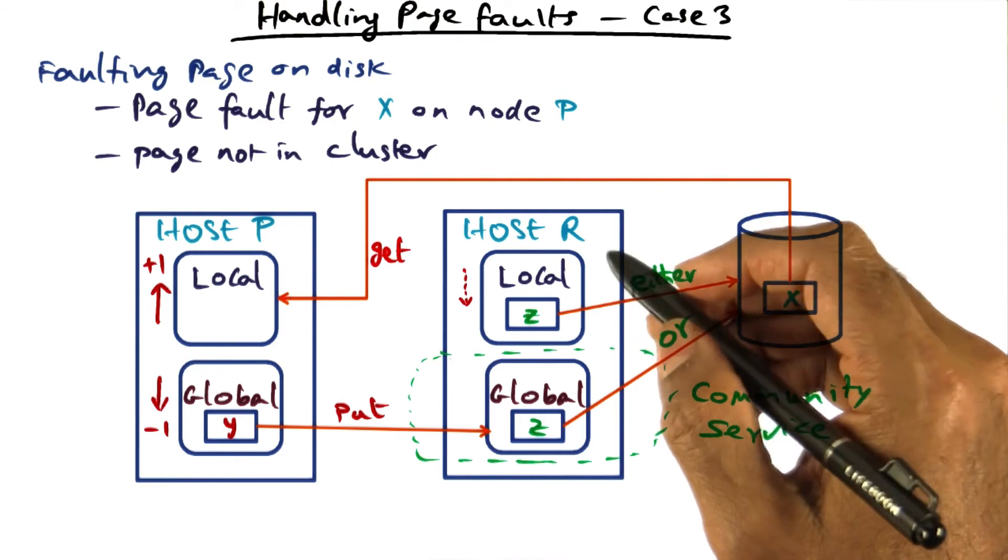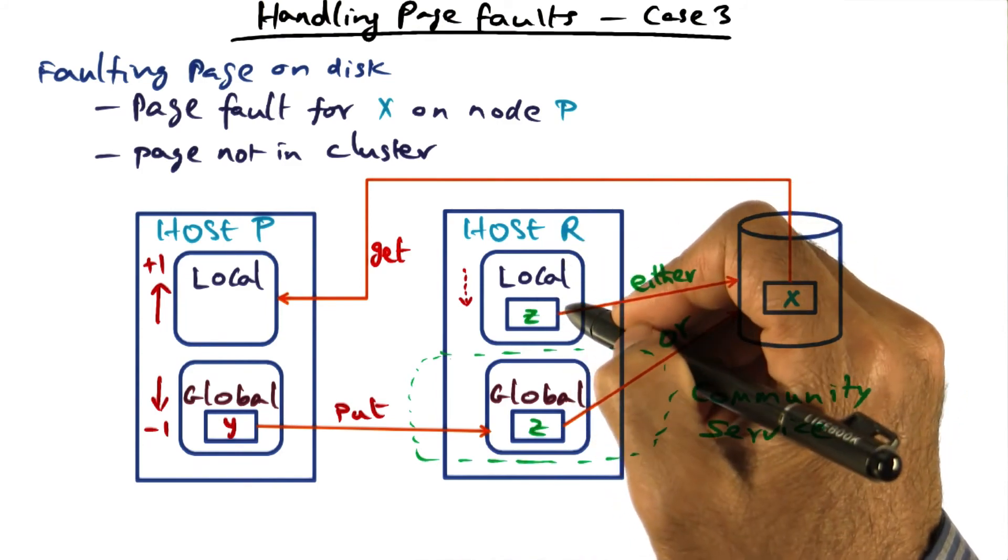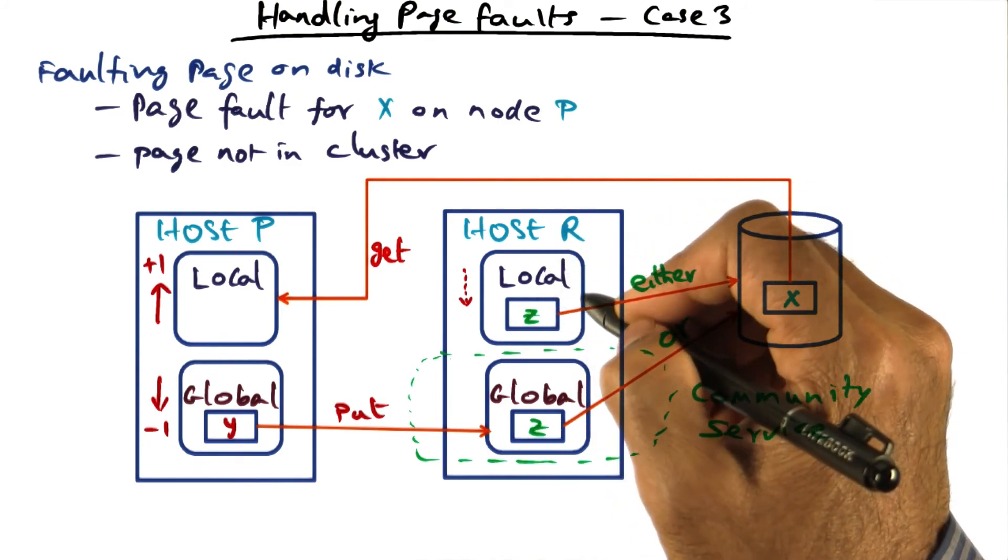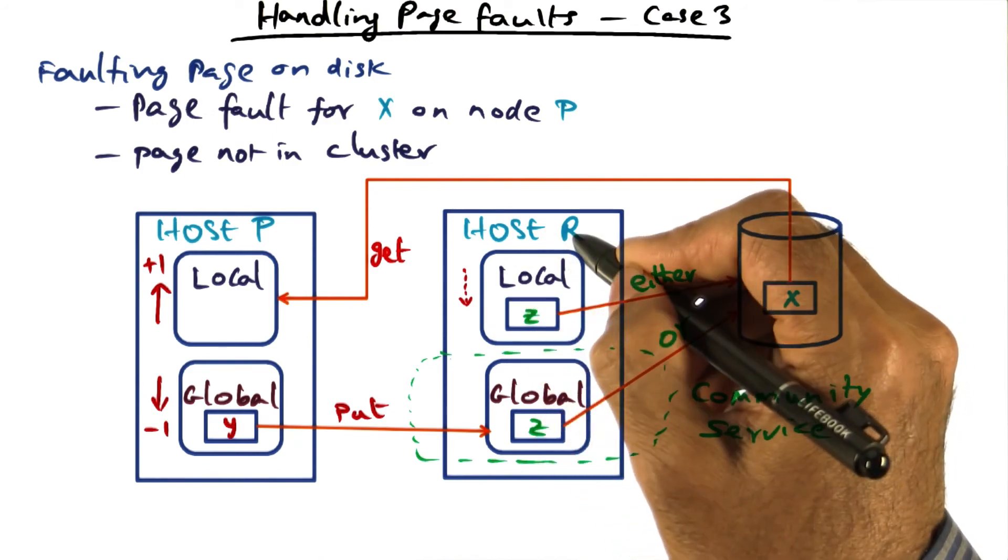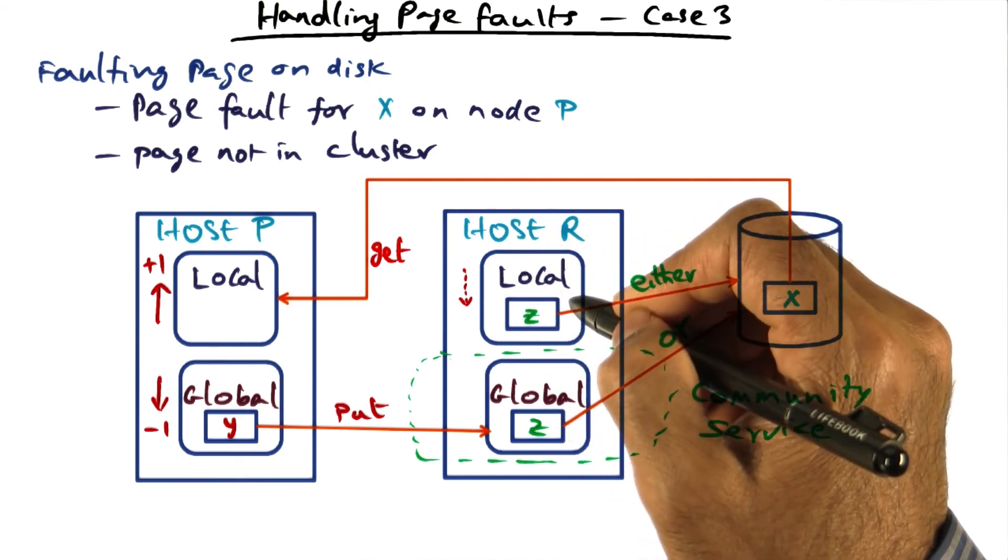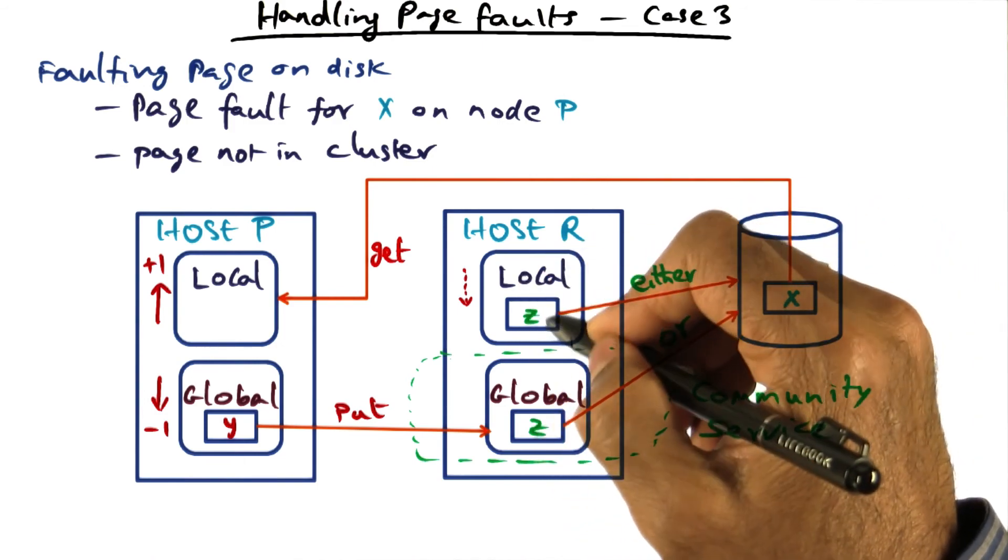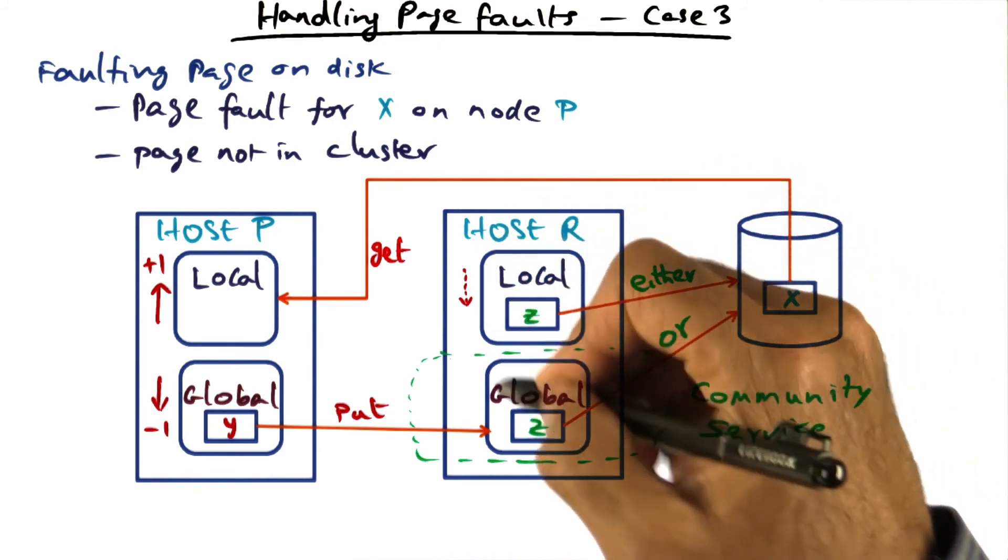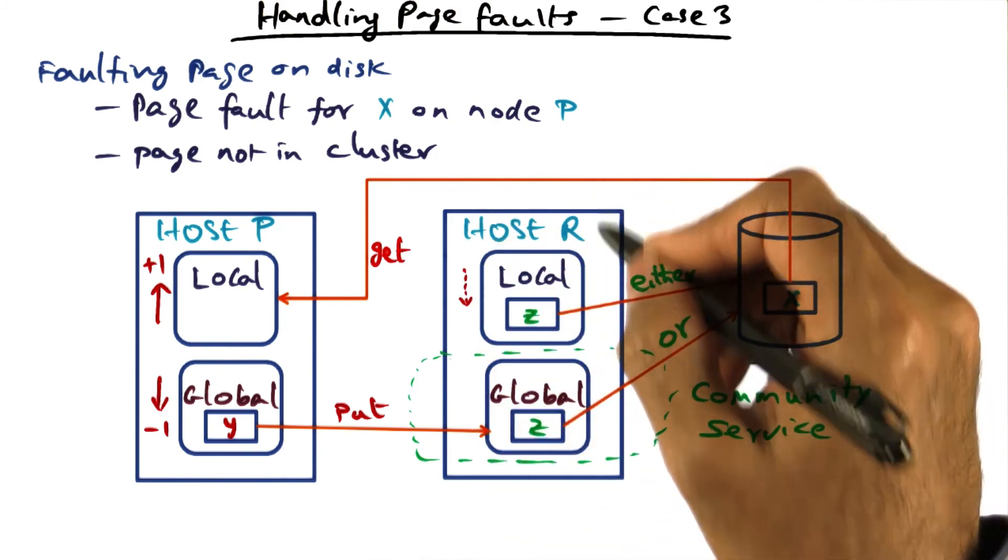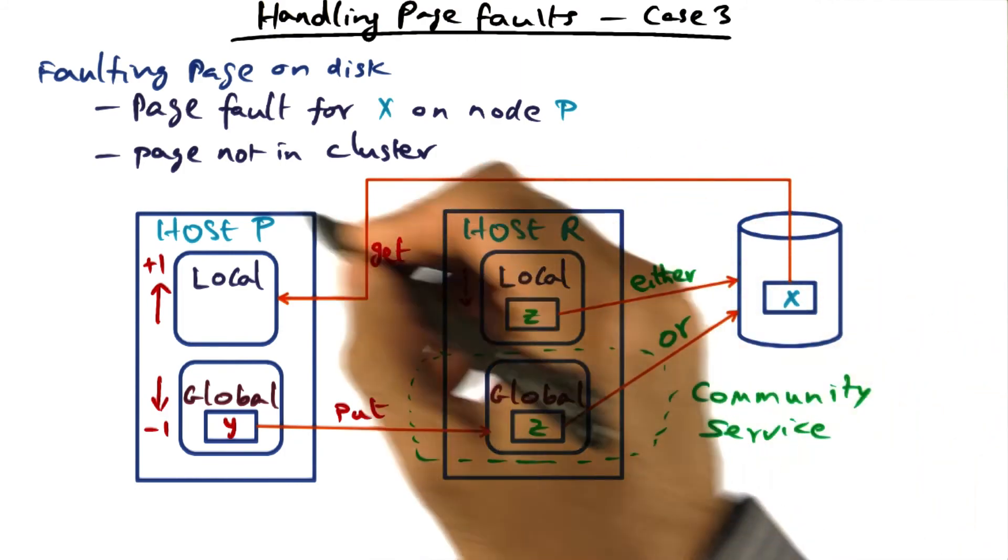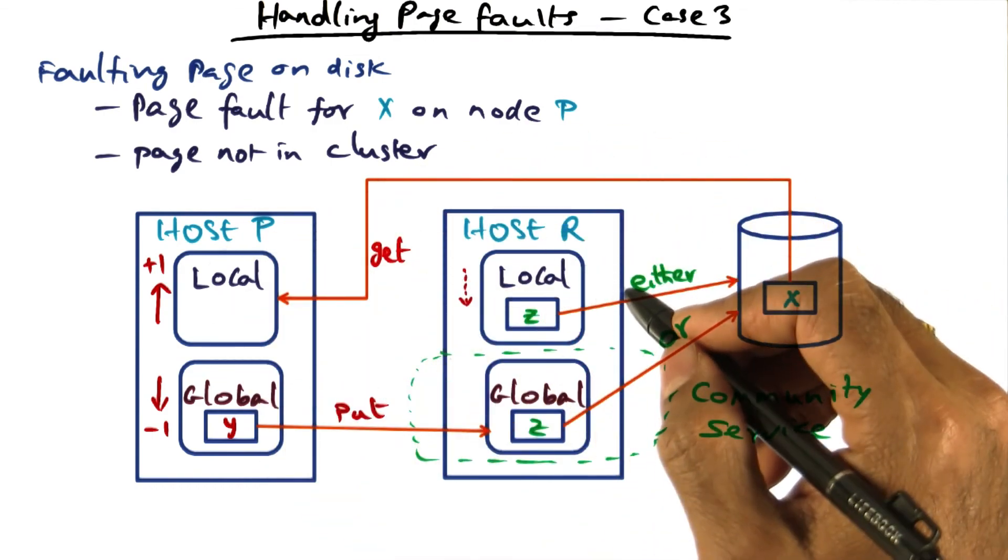But on the other hand, if the globally oldest page happens to be from the local part of host R, what that means is that even though originally we thought z to be part of the working set of host R, clearly the processes that were using it are either no longer active or they completed or whatever. And therefore, we are throwing out this page. The local part is shrinking. If the local part on host R is shrinking, what that means is I can use more of the memory that's available in host R for community service. That's the important message I should get out. That's the important message I want you to get out of looking at this particular page fault scenario.